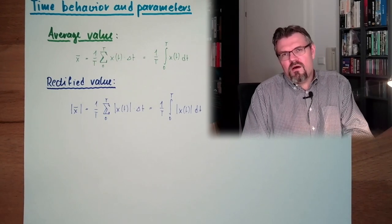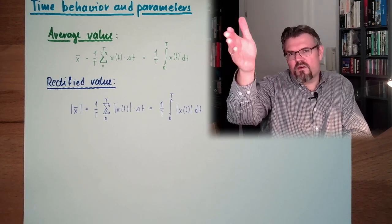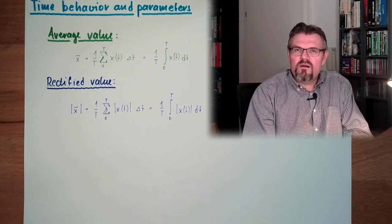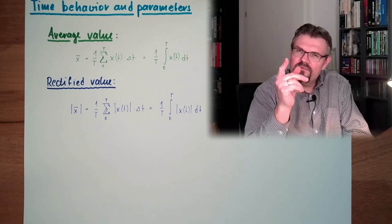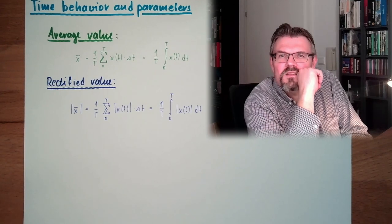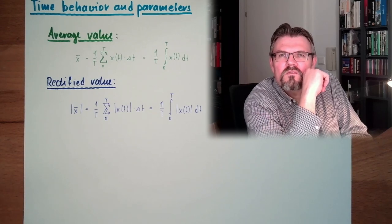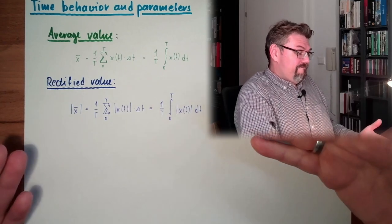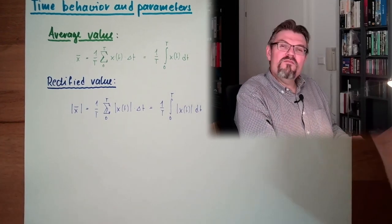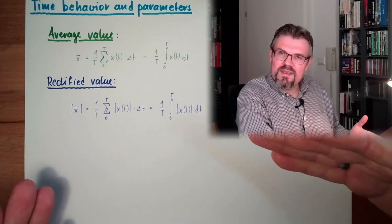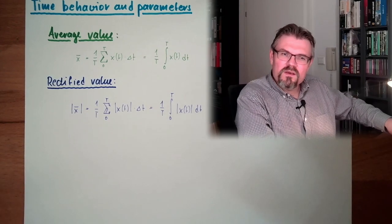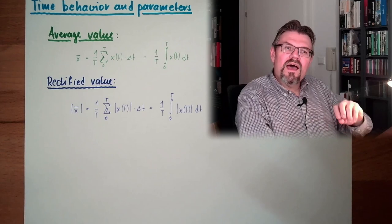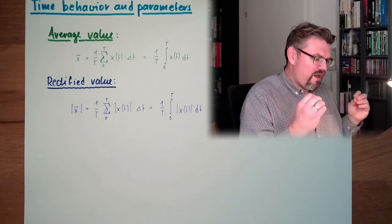But remember how we calculated power? Power was voltage multiplied by current — U times I. Taking into account Ohm's law, it was U squared divided by R, or I squared multiplied by R. We have this square relationship, so double the voltage does not mean double the power — double the voltage means four times the power. Half the voltage means a quarter of the power. The rectified value is not suitable for describing how effective a voltage is, because the small parts don't bring much power due to this square relationship. If I want to compare alternating current with direct current, I need to tell how effective a value is.